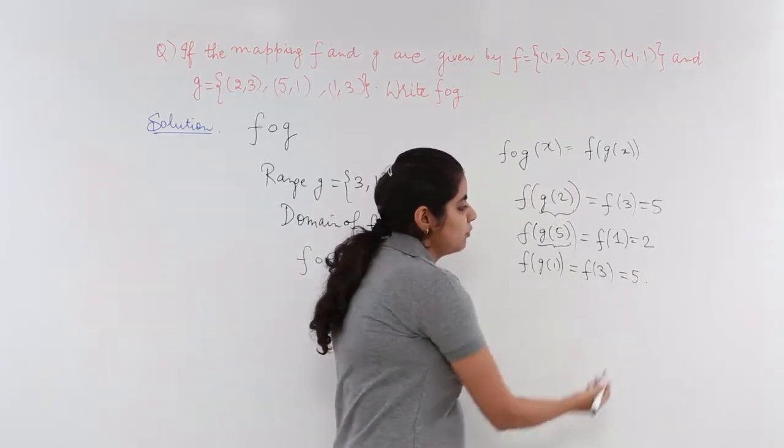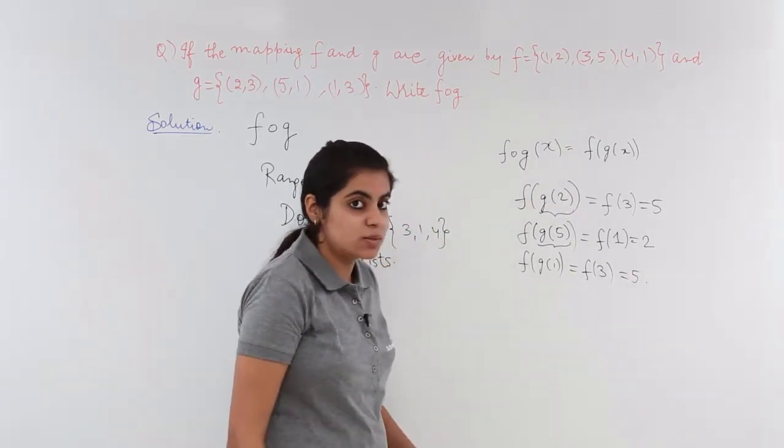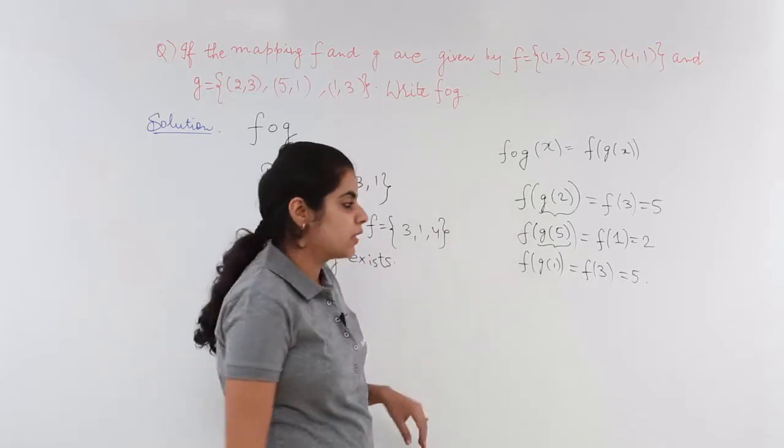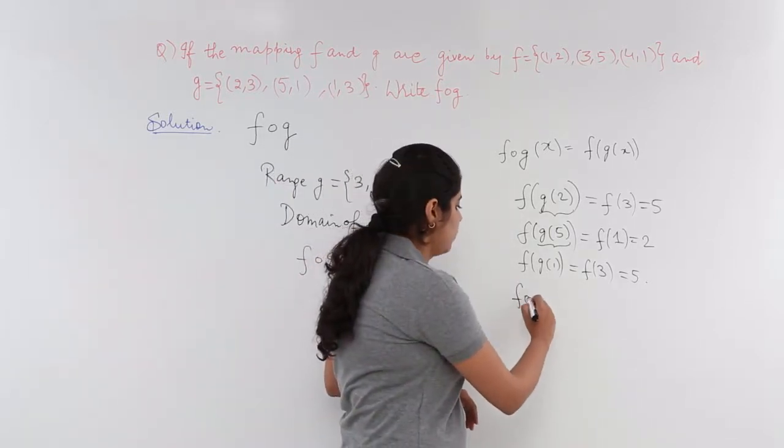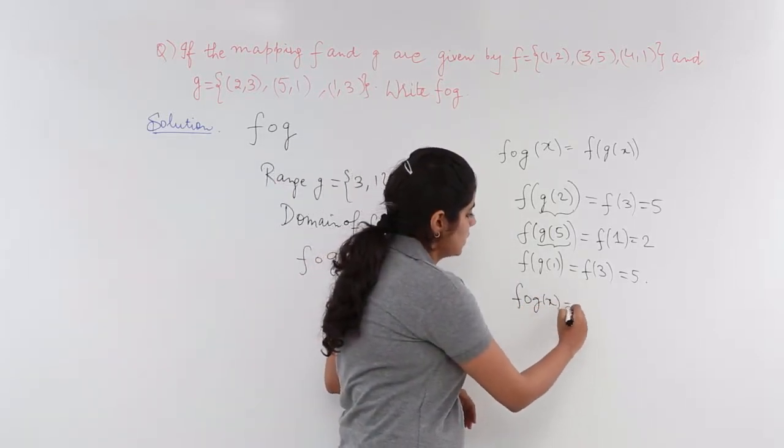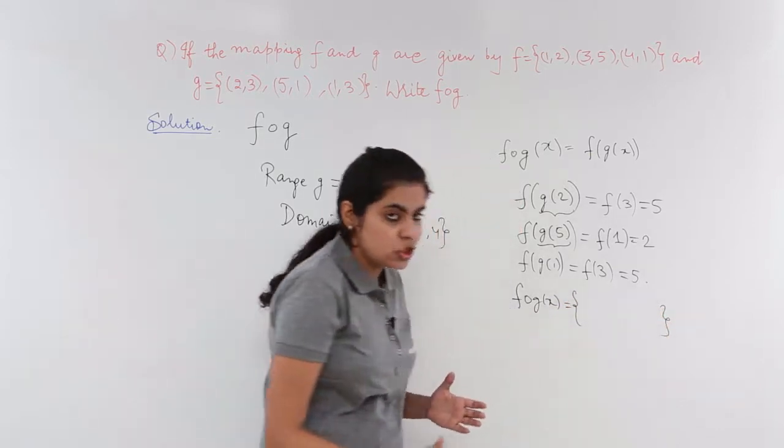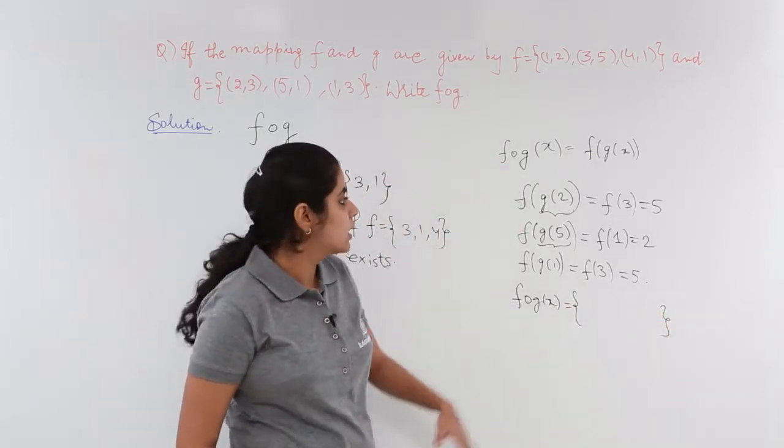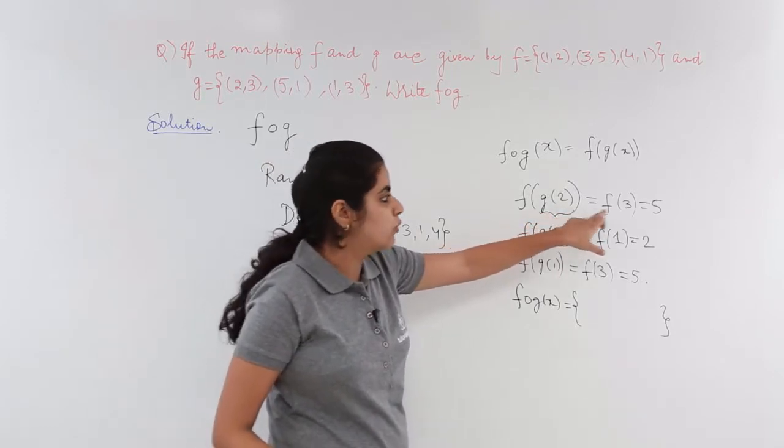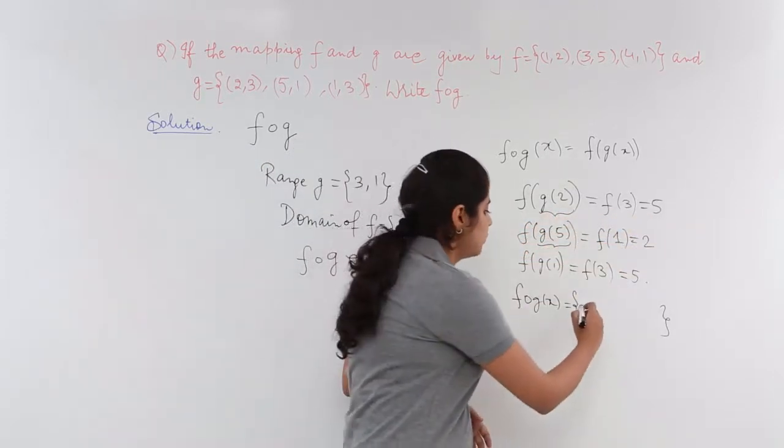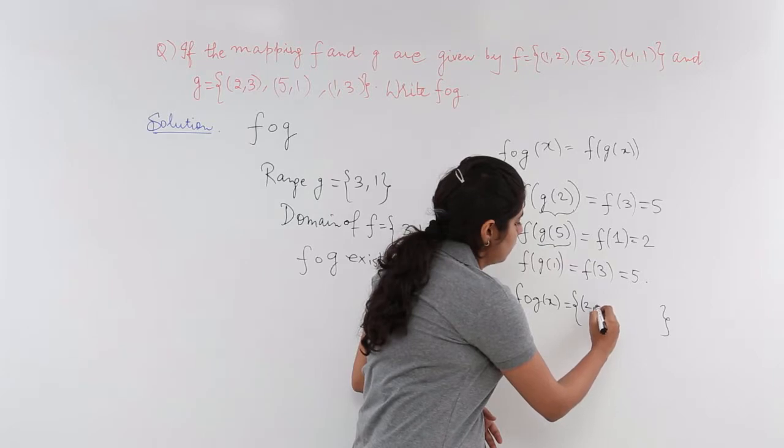So the value of FOG that we obtained is what? We will be seeing from here. So FOG of X is the set of 3 ordered pairs. Here the value is 2. For 2 we have 5. So the first ordered pair is 2, 5.